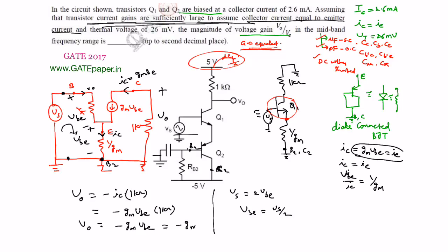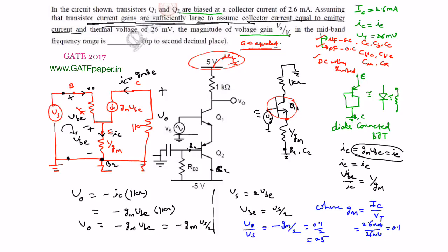So V0 equals minus Gm times (Vs/2) times 1 kΩ, giving V0/Vs equals minus Gm/2 times 1 kΩ. Gm equals IC/VT equals 2.6 mA / 26 mV equals 0.1 A/V. Therefore V0/Vs equals minus 0.05 times 10³ equals minus 50. The voltage gain for the given circuit is 50.